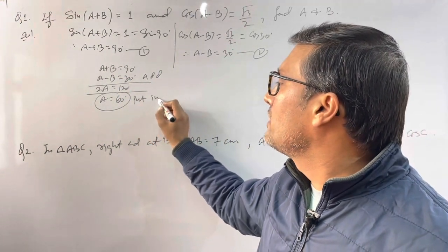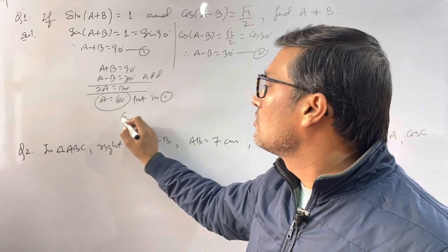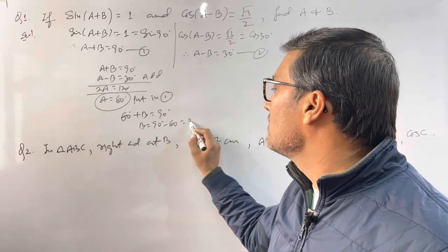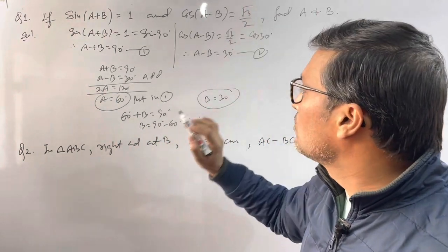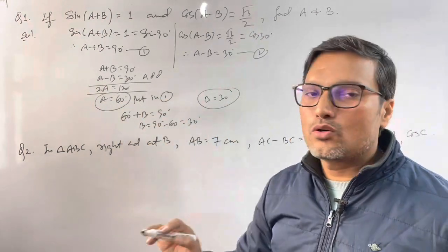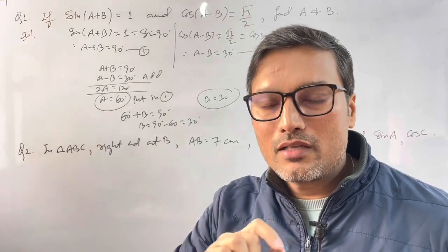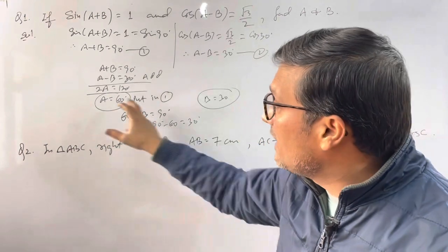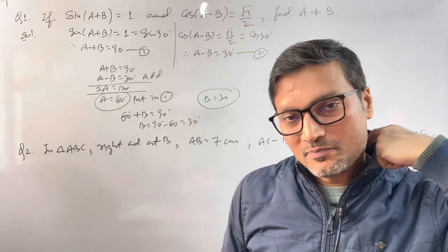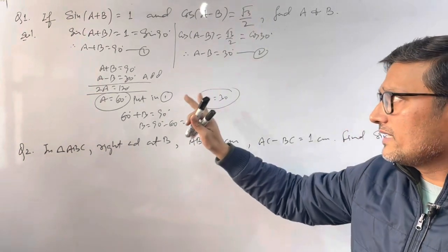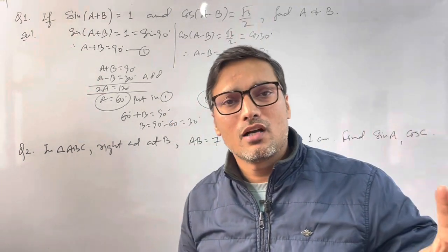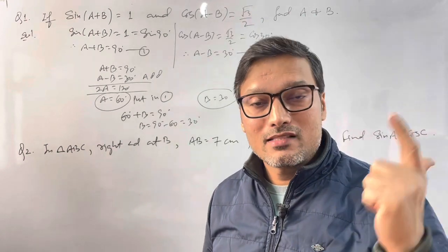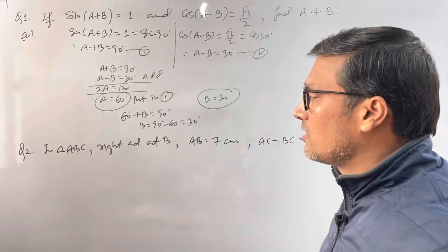So you have found A. Now put this into the first equation to find B. A is 60°, so 60+B = 90°, which gives B = 30°. So both A and B are found. When you get your answers, circle or highlight them so the teacher checking your paper can clearly see where your answer is. Practice this type of question — you will find many similar ones in RD Sharma and RS Aggarwal.